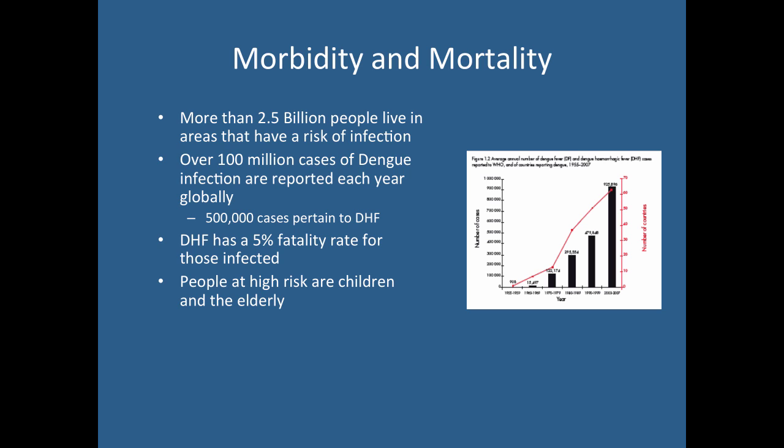Regarding the epidemiological factors: more than 2.5 billion people are living at risk of dengue. There are 100 million cases of dengue each year, and almost 500,000 of those are dengue hemorrhagic fever. The fatality rate of DHF is 5%, which is a significant number. Children, the elderly, and young adults are most at risk of severe dengue; the working-age population is at comparatively lower risk than with most other NTDs.